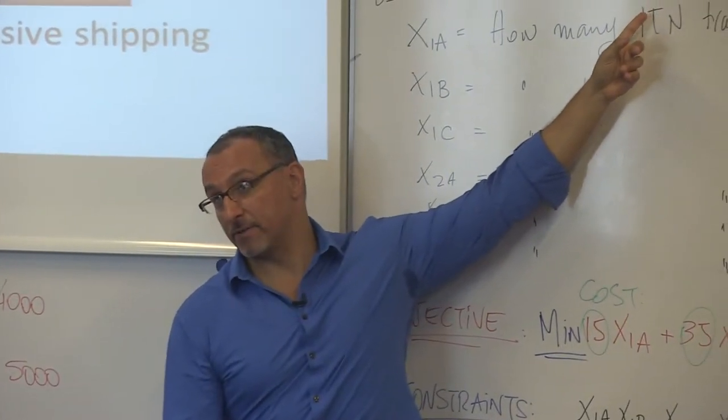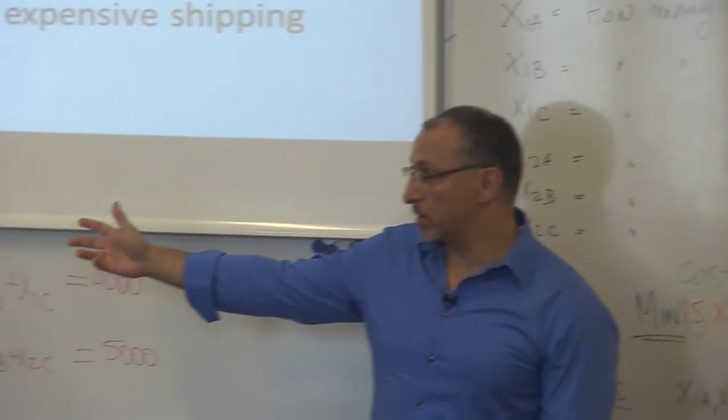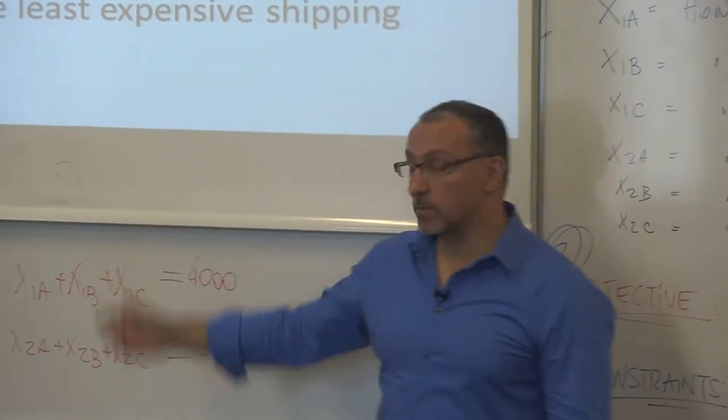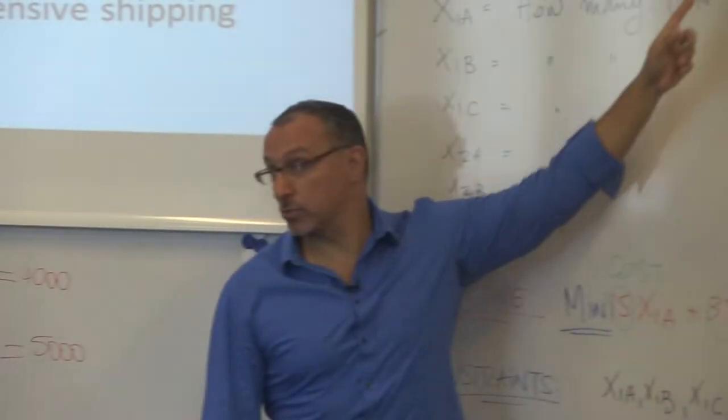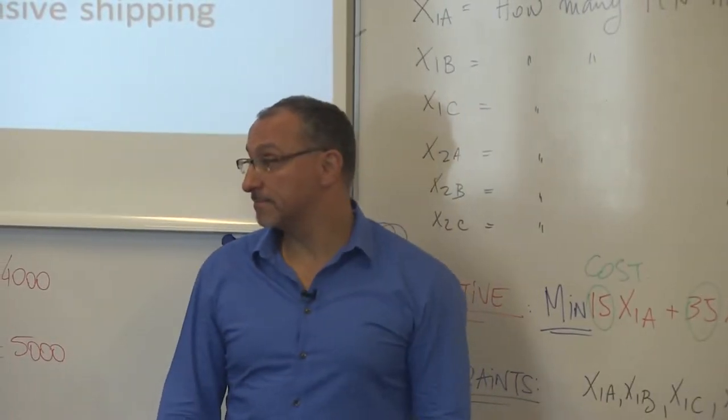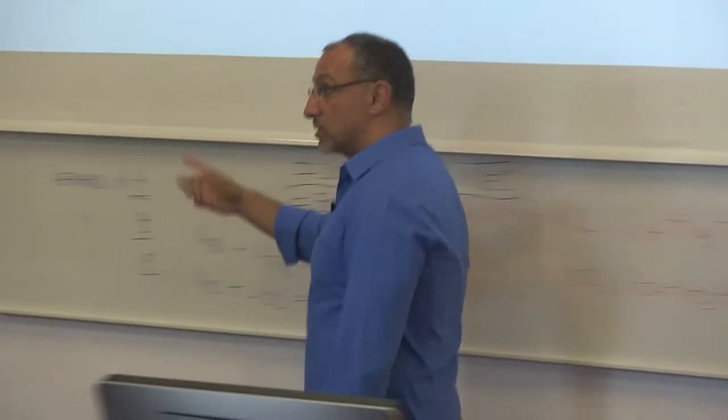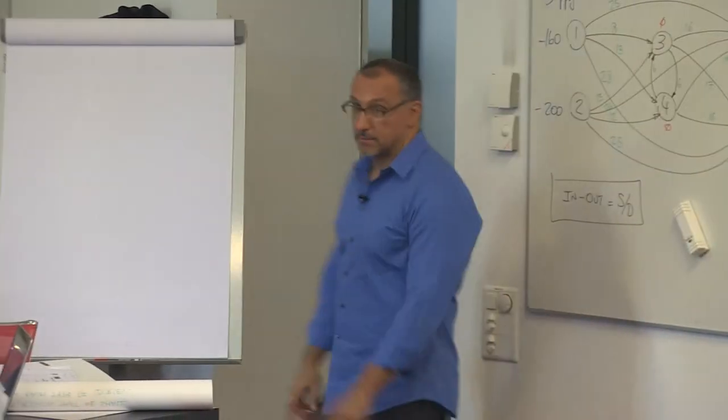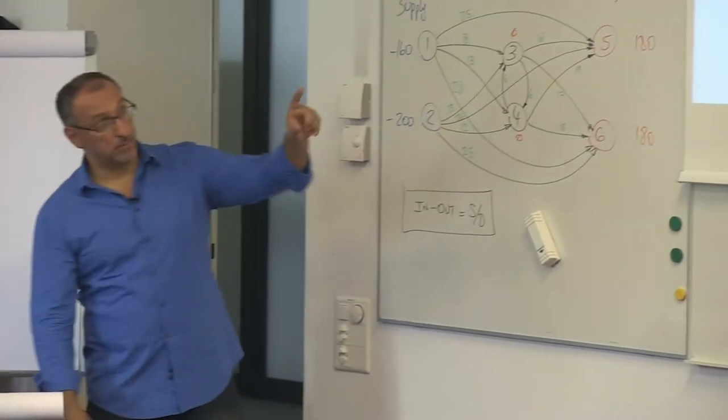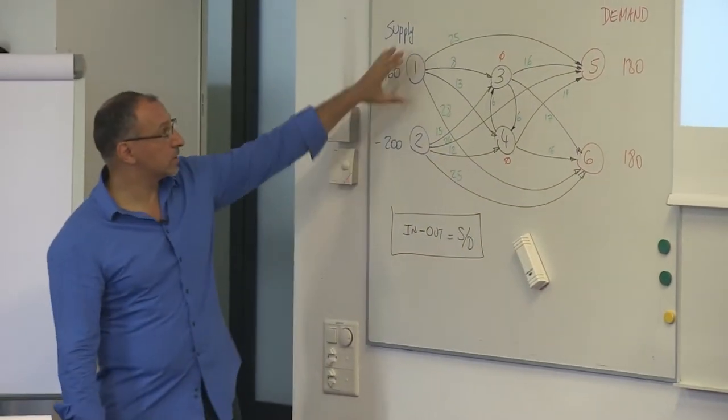How many decisions do we have? We need to count the arcs. So the number of variables equals the number of arcs.